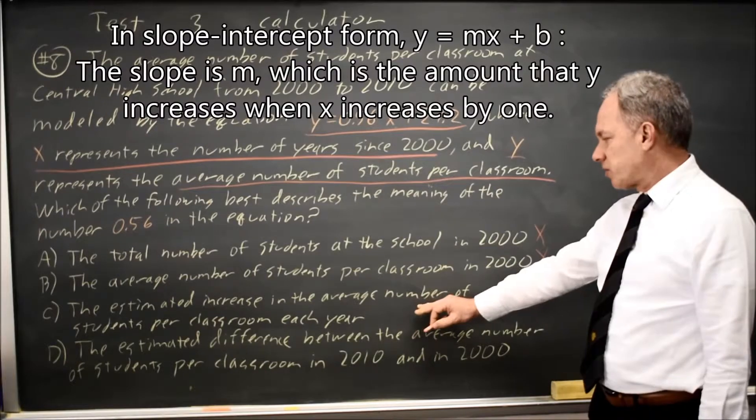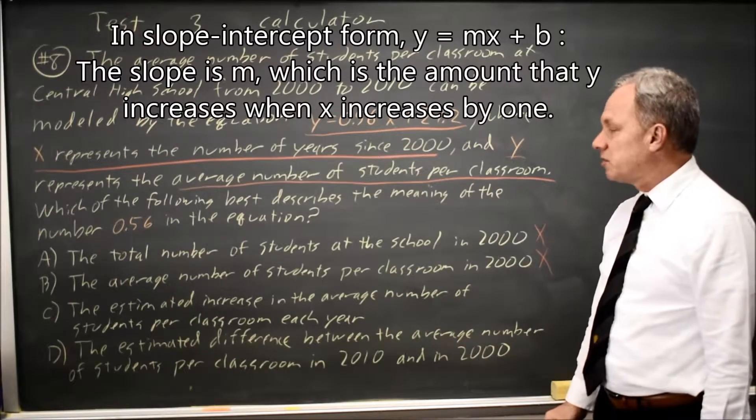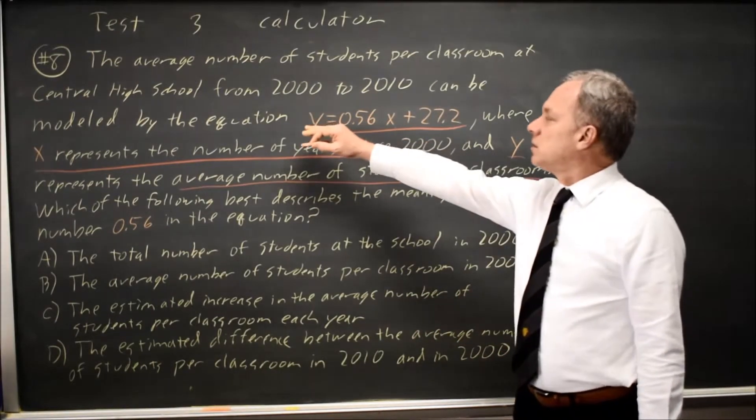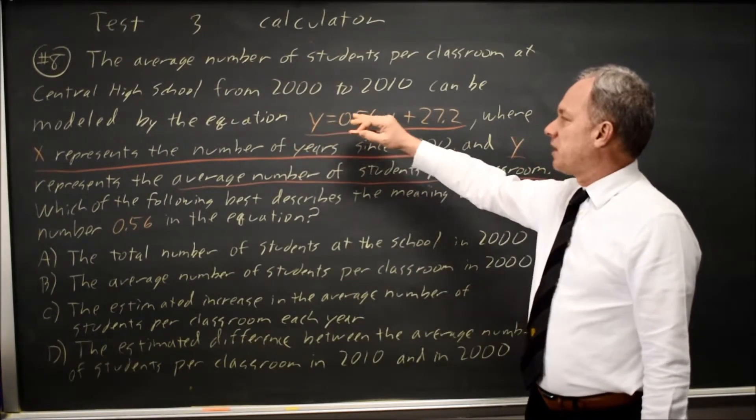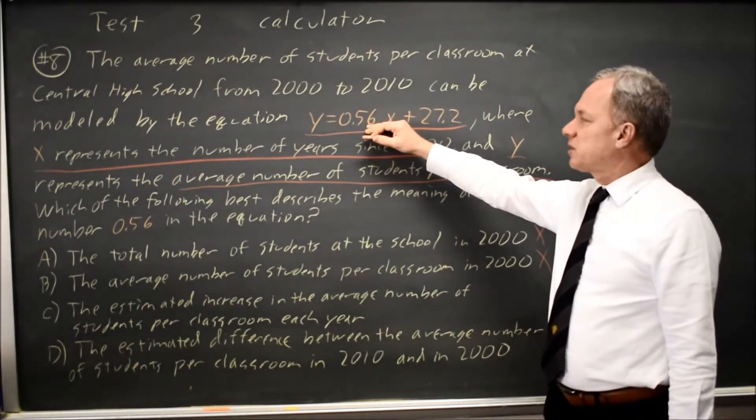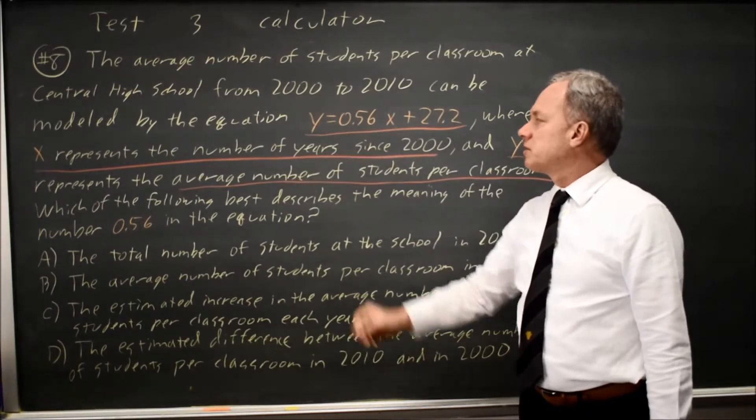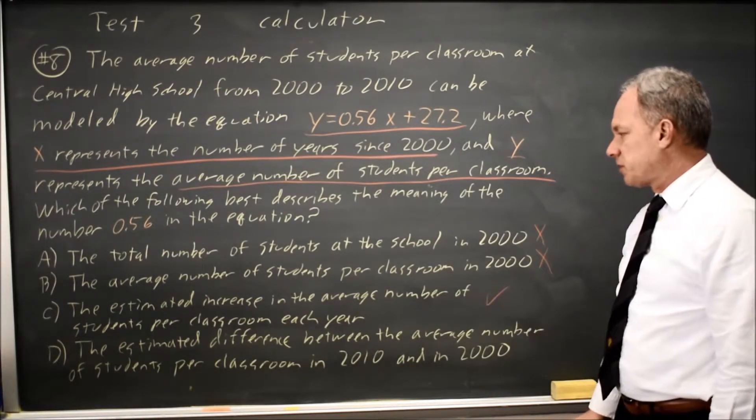Choice C, the estimated increase in the average number of students per classroom each year. Since y is the number of students per class, and x is the number of years, each time x goes up by 1, y goes up by 0.56, so that is a correct interpretation.